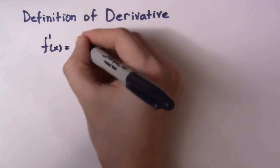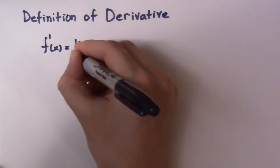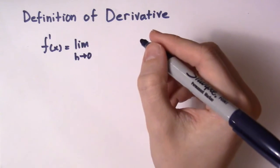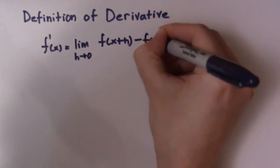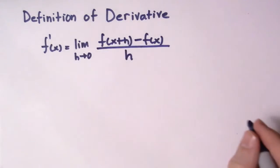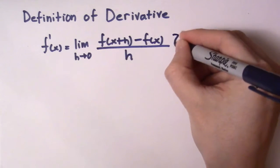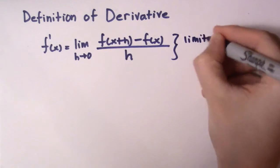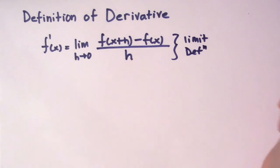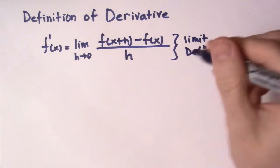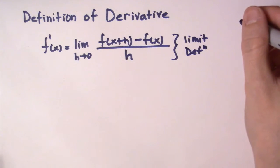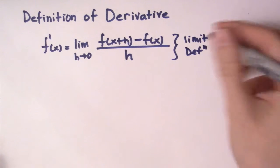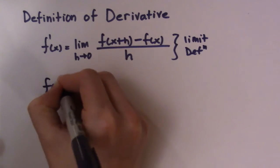So it looks something like this. So f prime of x — the derivative of a function — is equal to the limit, and I use h goes to zero. Some teachers use delta x. So f of x plus h minus f of x, all divided by h. This is the limit definition of derivative. I'm not going to get into exactly where this comes from in this video, but I do have another video on it that I'll link here if you want to know where this definition comes from. Basically where it comes from is the slope formula, so it's pretty simple but very useful. I'm going to use this to find the derivative of a root.